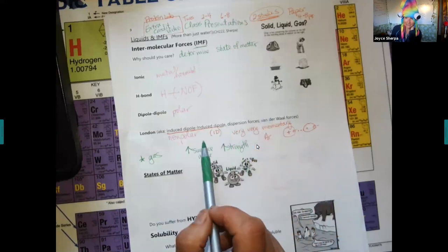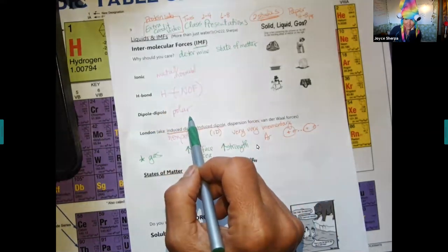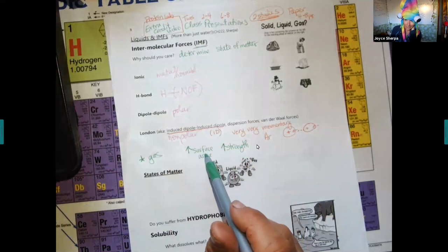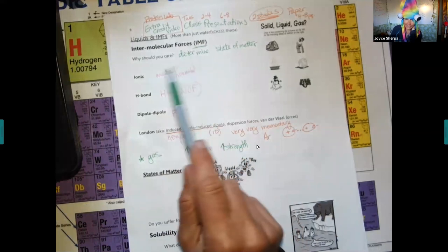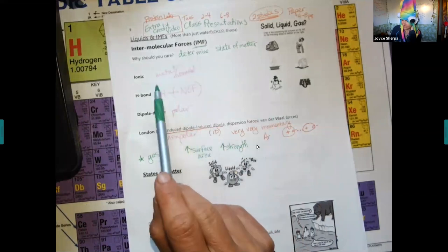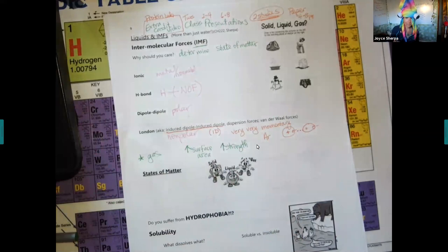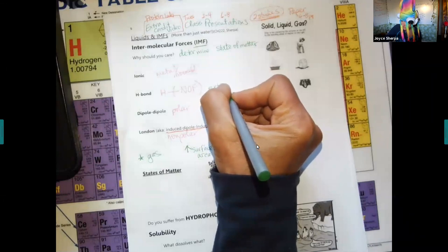There is a point where the surface area can become so large that it becomes higher than these other ones. If you get like 20 carbons, you're going to end up higher. Higher attraction than the H bond. This is why geckos can walk up the wall.